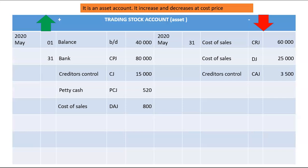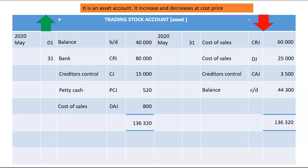Those are all the transactions that affect your trading stock account. To find the balance, the debit side total is 136,320. Subtracting the credit side items — 60,000, 25,000, and 3,500 — gives a balance carried down of 44,300. This represents the remaining trading stock that has not been sold or returned to the supplier. The new month will begin with that remaining stock of 44,300. In the next video, we will be discussing Creditors Control.